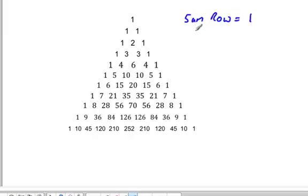And the sum of, so that's row zero. And so row one is the one plus one, which is two. Row two, the sum is four.